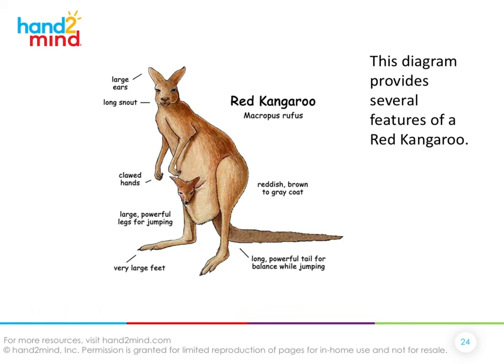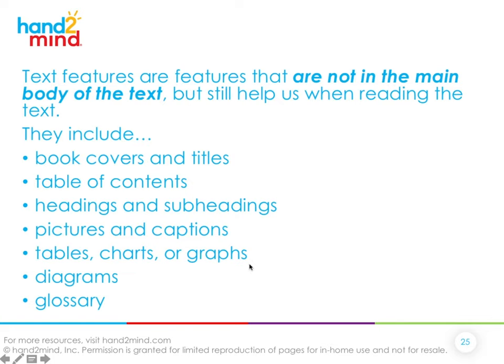Another text feature is diagrams. A diagram provides several features — this one in particular provides several features about a kangaroo. Oftentimes a diagram will show you facts and point to important details of what you're reading about.